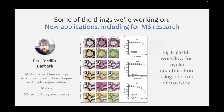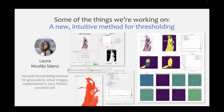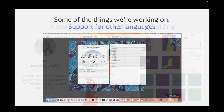Pao is a visiting researcher working on electron microscopy, using Fiji and Elastic registration. Laura has joined recently and is working on new and intuitive methods for thresholding - exploring how crucial the threshold can be and how automated thresholds give different results, trying to come up with a good general-purpose thresholding method that is easy to understand. There's also some work on adapting QuPath into different languages using automatic translations - the idea being to make QuPath as open and accessible for everyone as possible.